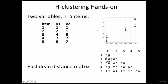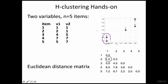In this matrix, the least distance means there is more similarity. You see that 1 is the least value, meaning the distance between 1 and 2 is the least. Hence you are going to group 1 and 2 and call it Cluster A.